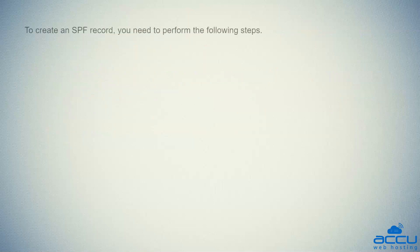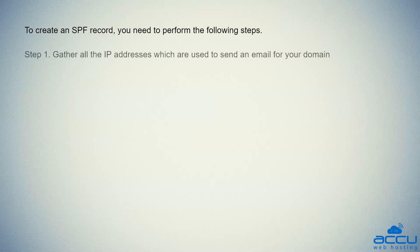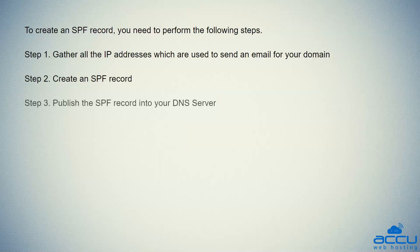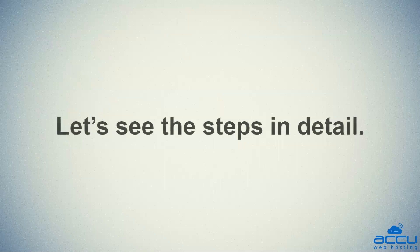To create an SPF record, you need to perform the following steps. Step 1: Gather all the IP addresses which are used to send an email for your domain. Step 2: Create an SPF record. Step 3: Publish the SPF record into your DNS server. Step 4: Test your SPF record with the SPF record checker. Let's see the steps in detail.